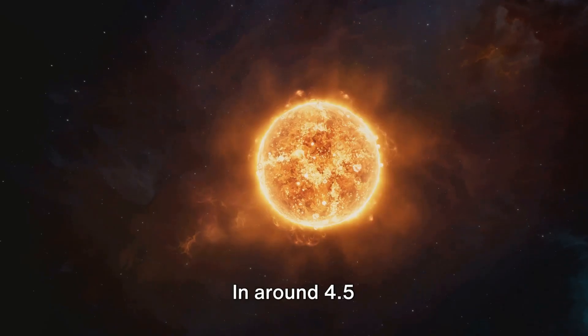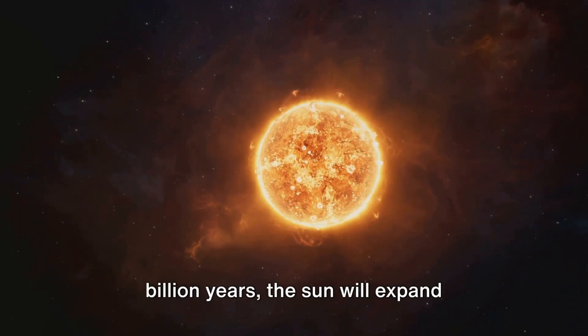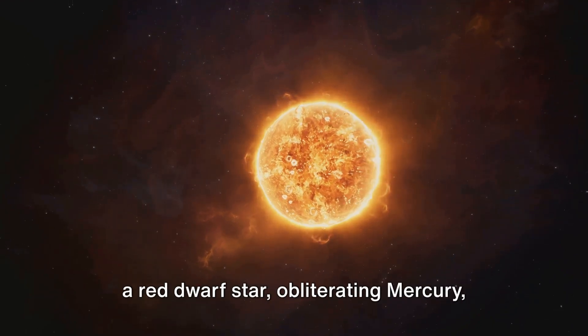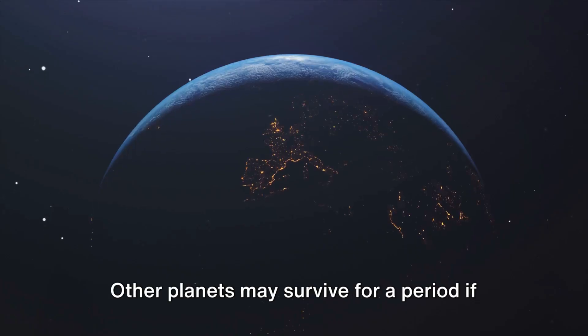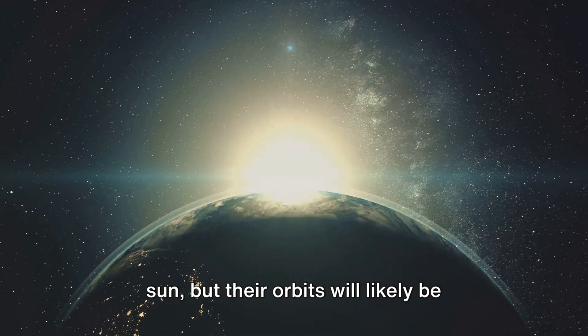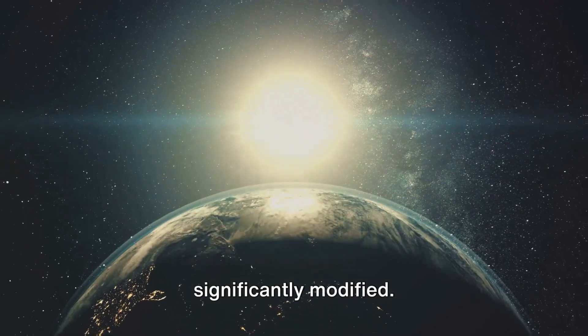In around 4.5 billion years, the sun will expand outward to reach Earth's orbit and become a red giant star, obliterating Mercury, Venus, and Earth. Other planets may survive for a period if they are not engulfed by the expanding sun, but their orbits will likely be significantly modified.